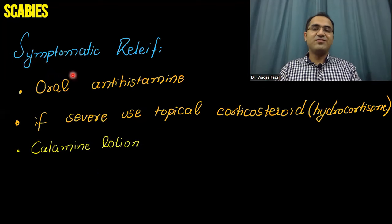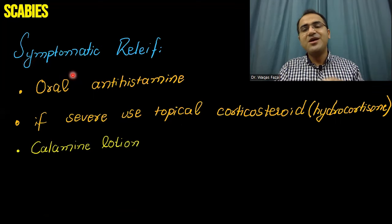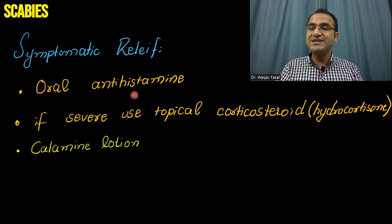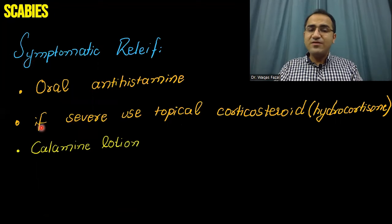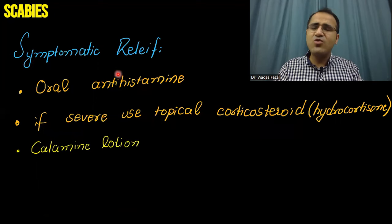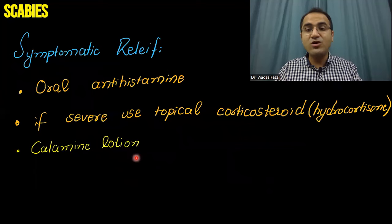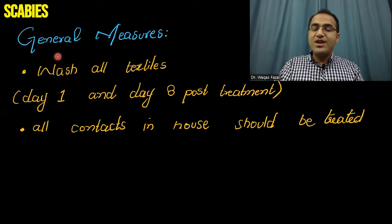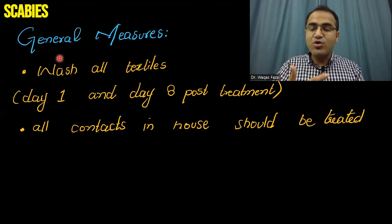For symptomatic relief alongside the scabicidal treatment, oral antihistamines should be given — especially at night — to prevent itching. If itching is severe, topical corticosteroids can be used, but oral antihistamines are preferred. Calamine lotion can also provide symptomatic relief.